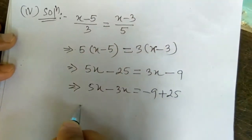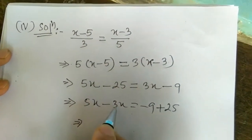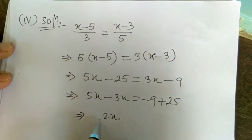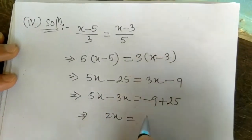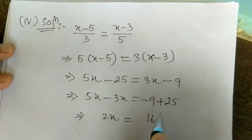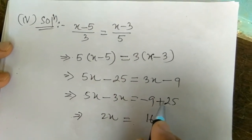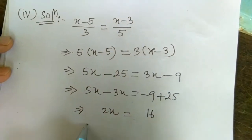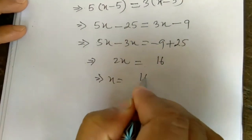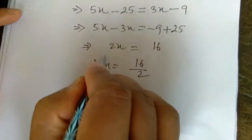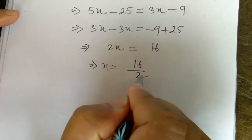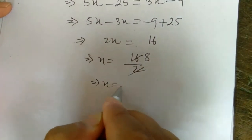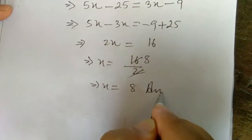Now bring variables to the left: 5x - 3x = -9 + 25. So 2x = 16, which gives x = 16/2 = 8. So x = 8. This is the answer and this is the last question. Thank you.